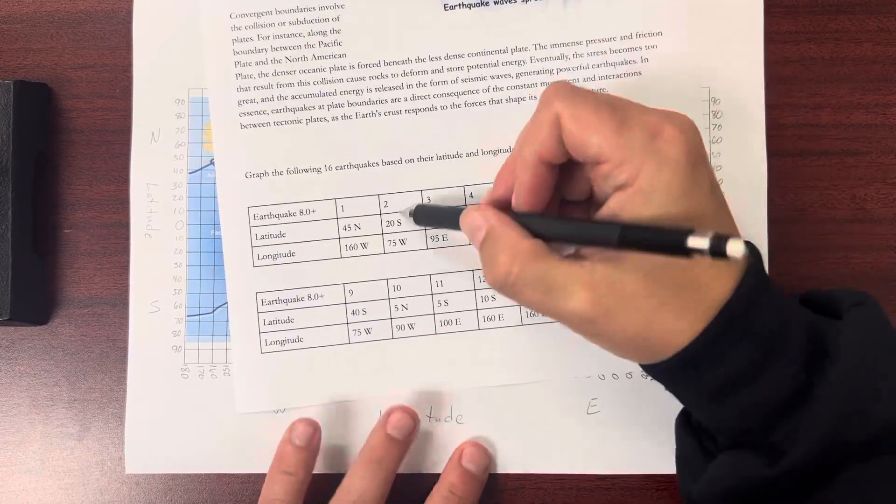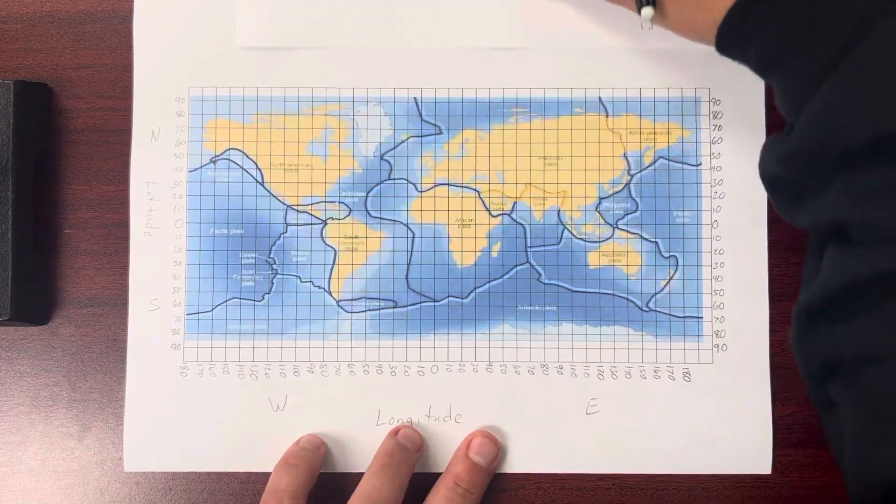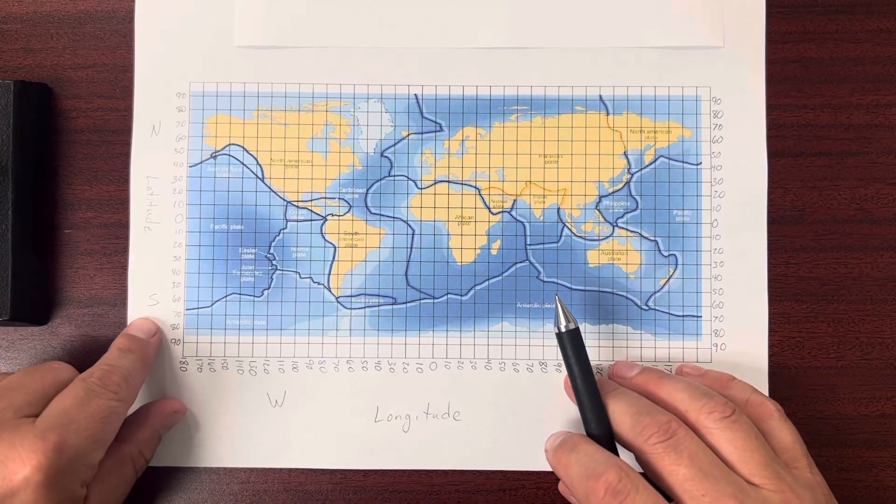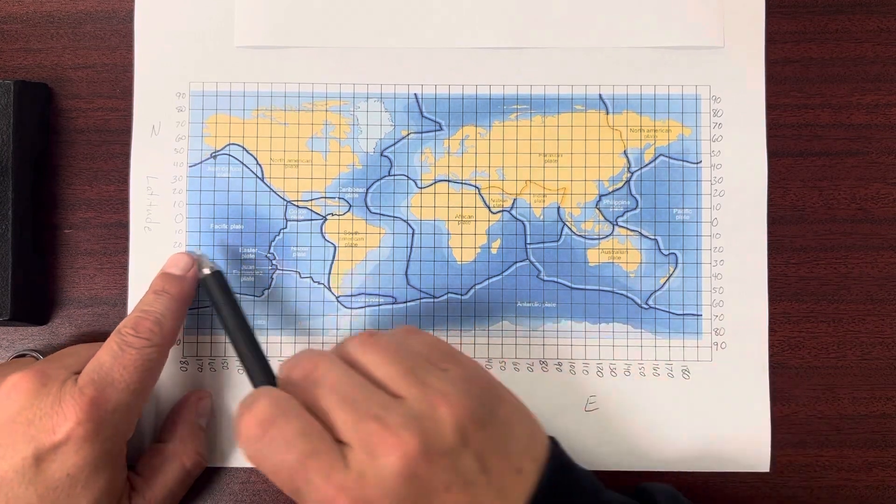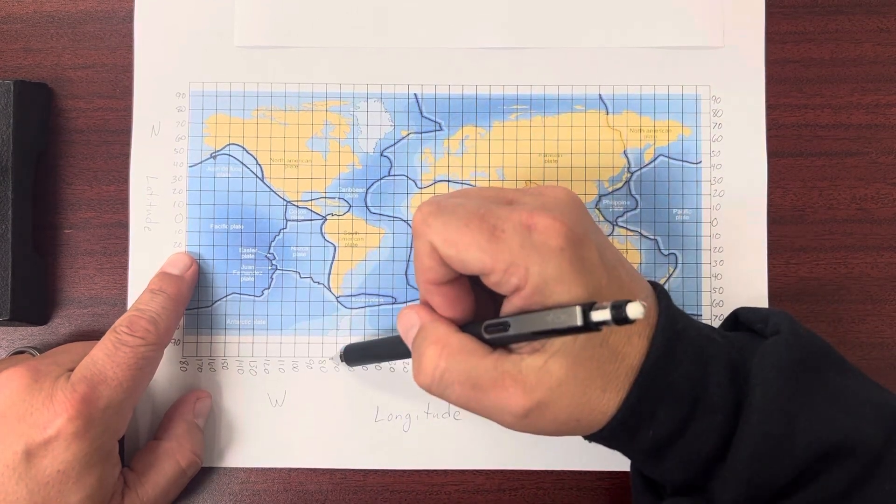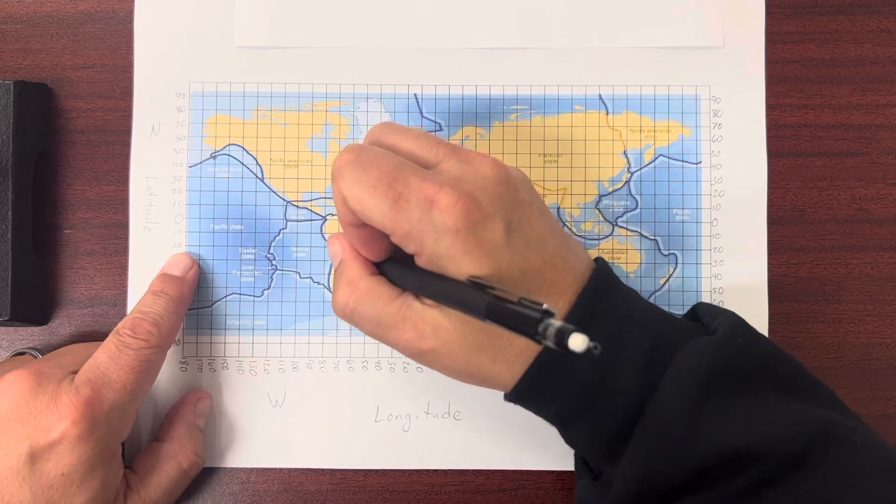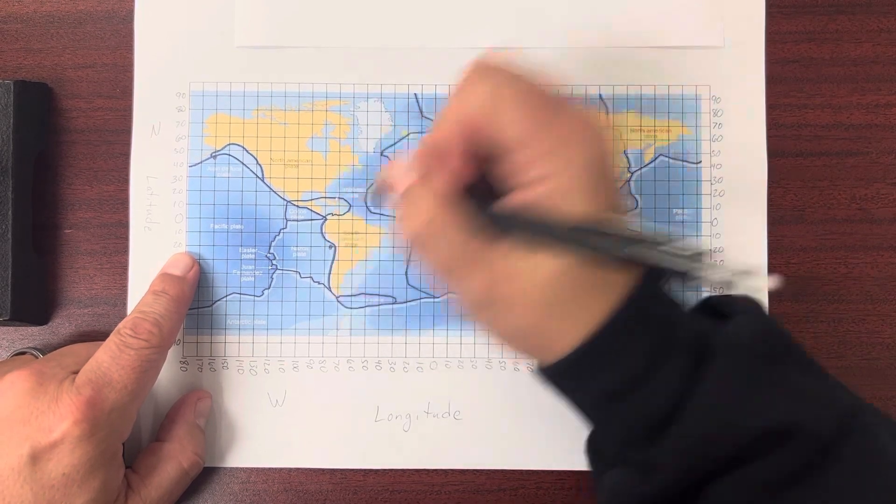Let's do the second one. 20 south, 75 west. So south latitude, 20 is here. 75 west is here. So we go 75 is right there. 20 is here. I'm going to mark that.